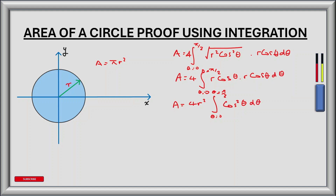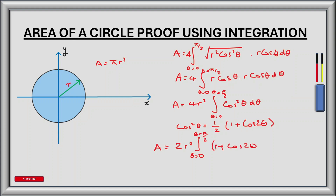Now to integrate this we can use another trig identity. Cos squared theta is equal to a half multiplied by 1 plus cos 2 theta. So substituting this into our area equation, we take the half outside the integral sign and divide it into 4r squared to get area equals 2r squared times the integral from theta equals 0 to theta equals pi by 2 of 1 plus cos 2 theta dθ.